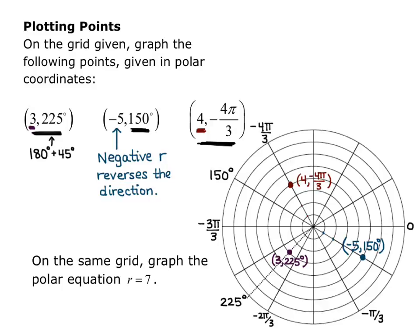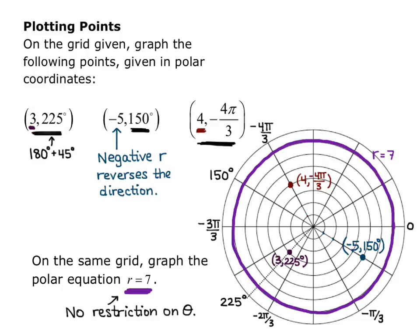Now on the same grid, let's graph the polar equation r = 7. Notice there is no restriction on θ — we just know that r equals 7. This is going to be the graph of all possible points that are exactly 7 spaces away from the origin, so we end up with a circle of radius 7 centered at the origin. Anytime you have r equals a number, you'll end up with a circle as your graph.